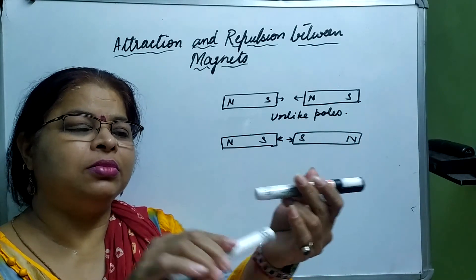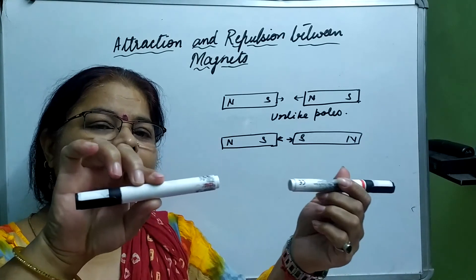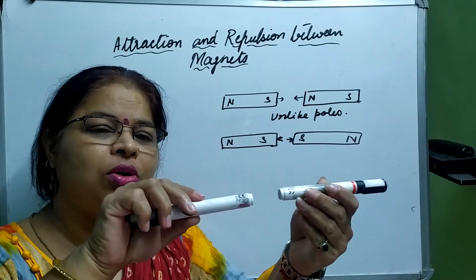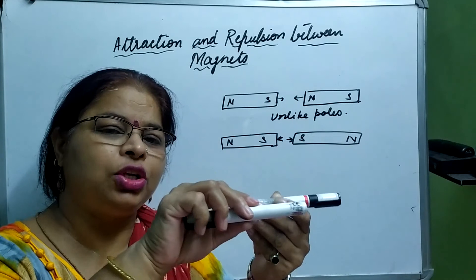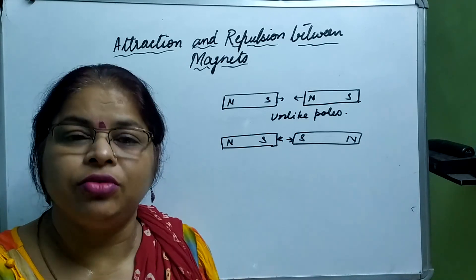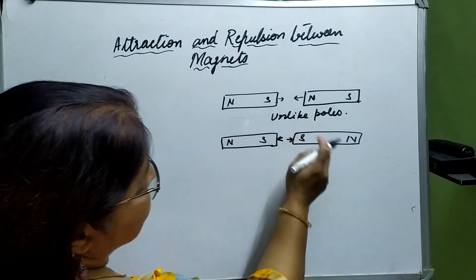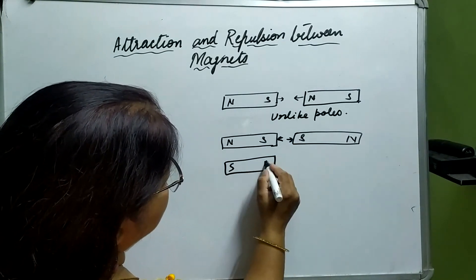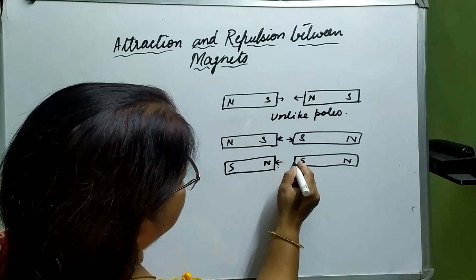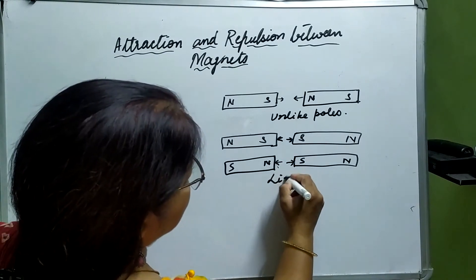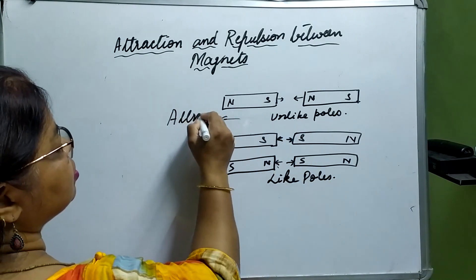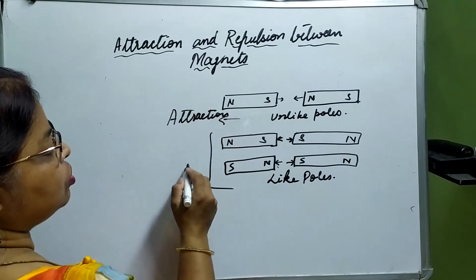But if we reverse them so that like poles face each other, they are going to push each other — not attract, but push. When you bring two like poles in front, they will push away. Even if you force them to stick, they will slip and not attract at all. Whether it is South-South or North-North facing each other, they are going to push each other. Unlike poles always show attraction, while like poles always show repulsion.